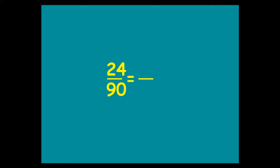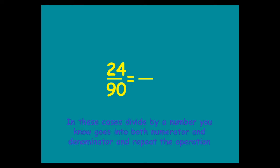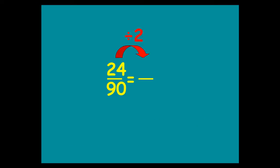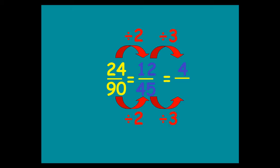24 over 90 — what can we do here? Well, sometimes it's not that easy to figure out what the biggest number is that you can divide by, so just go with something you know. You know that they're both even numbers, so divide top and bottom by 2 — you end up with 12 over 45. Now, is there anything that goes into 12 and 45? Yes there is — you can then divide these two numbers by 3, and you end up with 4 on the top and 15 on the bottom. Now can you go any further than 4 over 15? The answer is no — there's no number that goes into 4 and 15 apart from 1, so you've reached the end of the road.